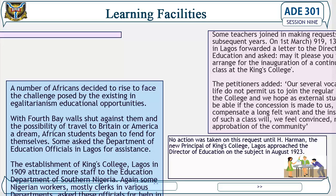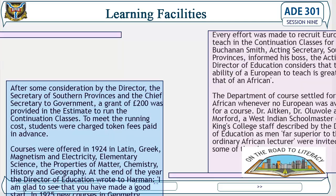The letter read: 'May it please you to arrange for the inauguration of a continuation class at King's College.' The petitioners added: 'Our several vocations and life do not permit us to join the regular courses of the college, and we hope as external students to be able, if the continuation is made, to compensate a long-felt want, and the institution of such a class will, we feel convinced, meet the approbation of the community.' No action was taken on this request until H. Hamann, the new principal of King's College Lagos, approached the Director of Education on the subject in August 1923. After some consideration by the Director, the Secretary of Southern Provinces, and the Chief Secretary to Government, a grant of 200 pounds was provided in the estimates to run the continuation classes.